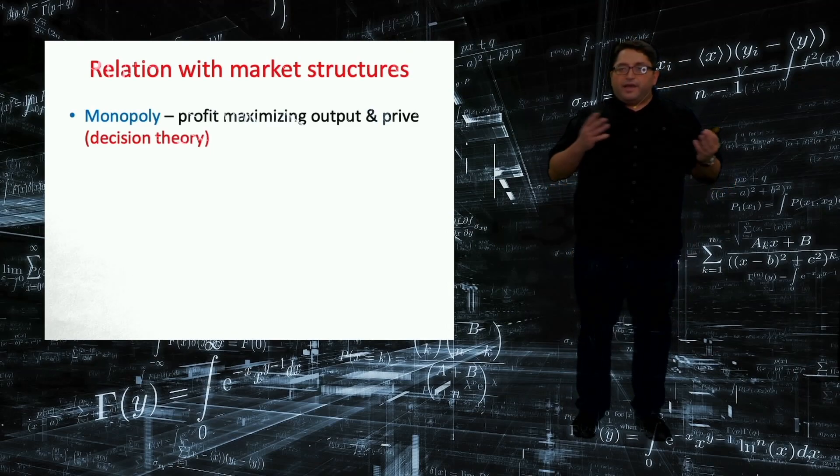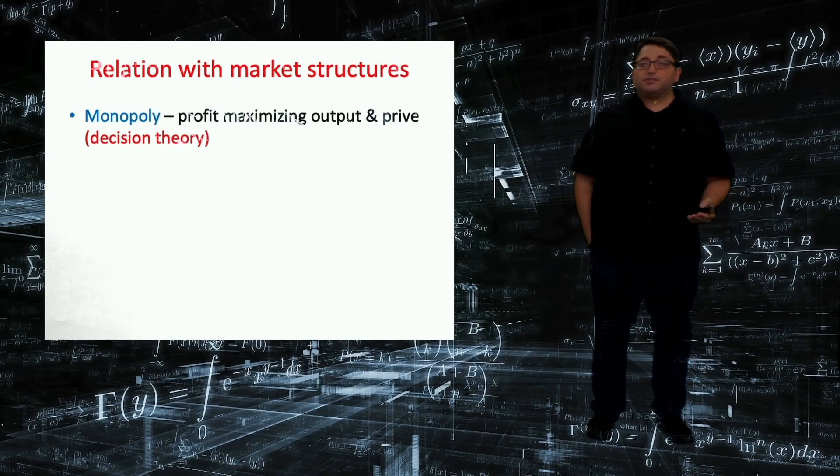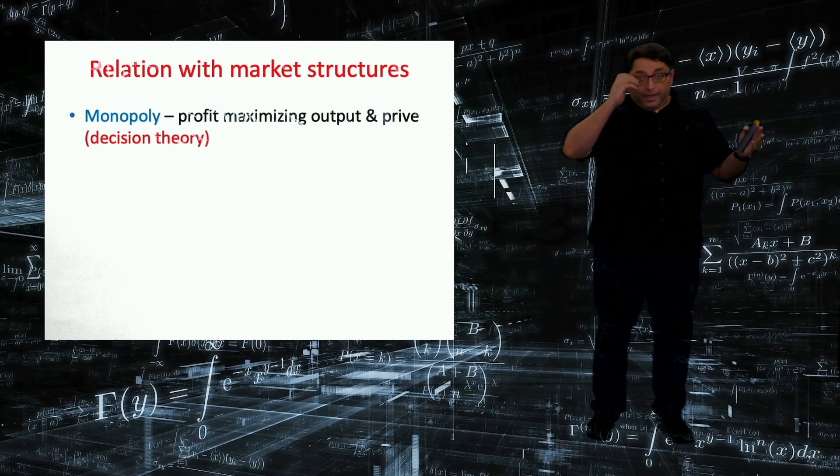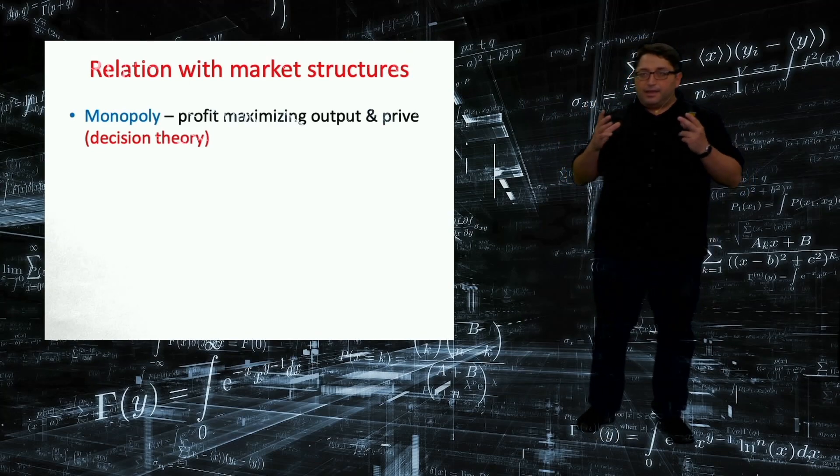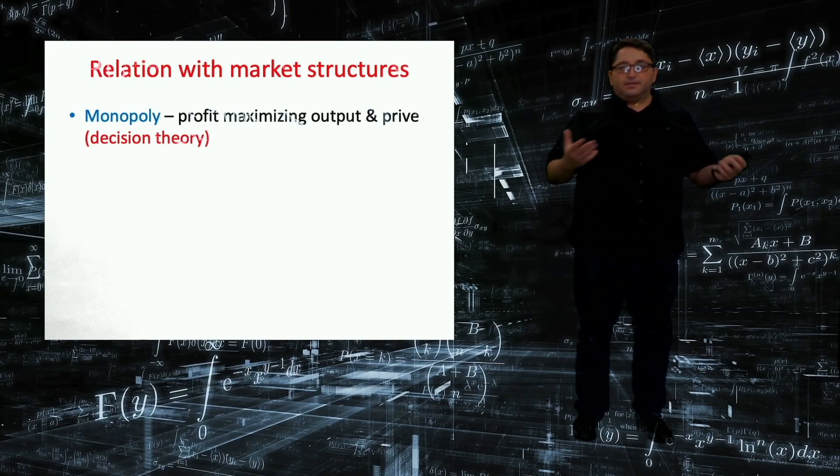So why would economists care about game theory among other social sciences? Because we would like to understand how markets function. And you can think about the markets as a spectrum between two extreme points, monopoly and perfect competition, and we will have other structures in between what we call imperfect competition. So let's start with the monopoly. There is a single seller, and that seller decides about how much to produce and what price to charge. So there is no interplay, there is no interaction. That seller is a profit-maximizing firm.